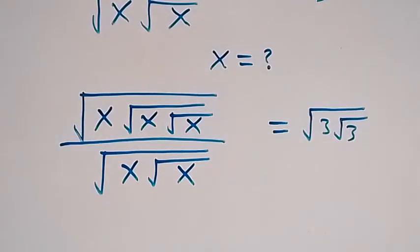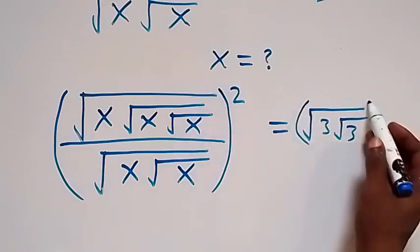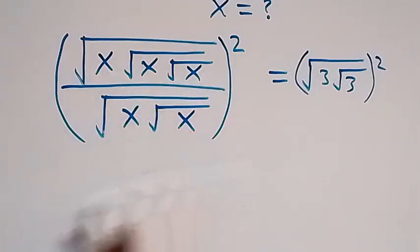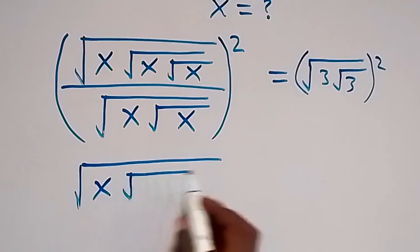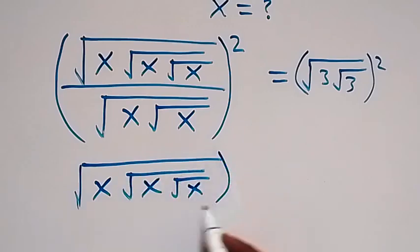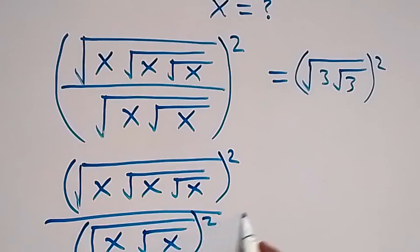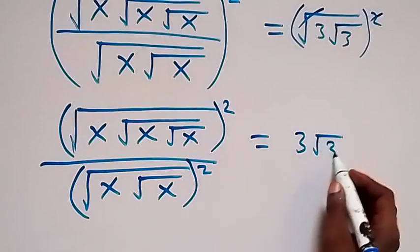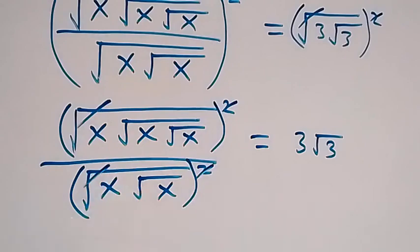We have two methods of solving this. The first method: let's square both sides. When we square both sides, we square both the numerator and denominator. We have square root of x, then square root of x, square root of x — all squared — divided by root x, root x also squared. On the right side, the square affects the square root and we have 3 with root 3 left.